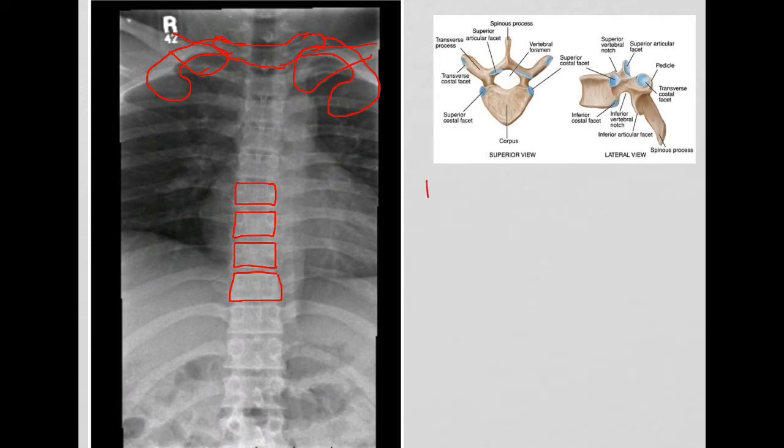Now note that T1, T11, and T12 have direct articulations with their respective thoracic vertebral bodies. So what I'm saying is T1 articulates, or I'm sorry, first rib articulates directly with T1 and T12 articulates directly with the 12th rib and T11 articulates directly with the 11th rib. So this is T1.